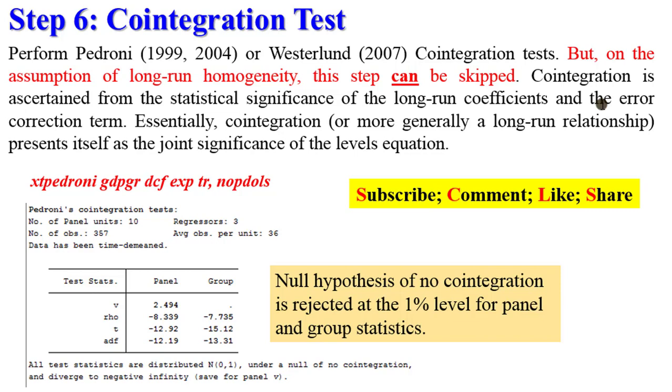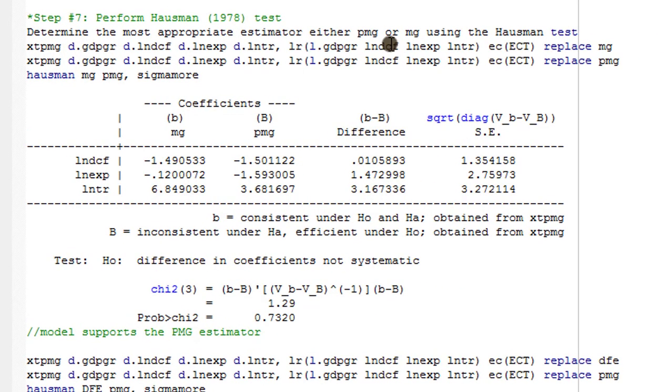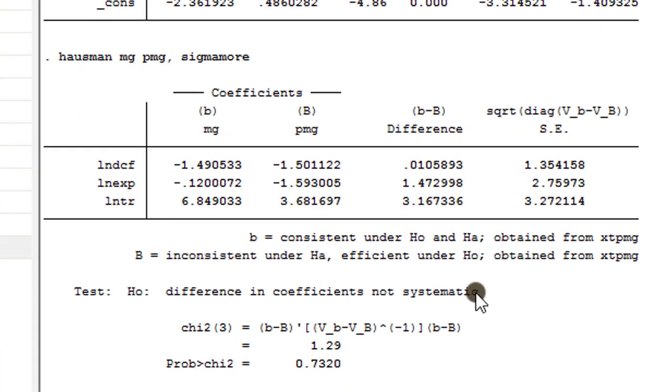Let's move now to step seven. Step seven is to determine which estimator is most appropriate: the pooled mean group or the mean group. Here is the code. I'm going to highlight both. You have the MG, the PMG, and the Hausman test, so I'm going to execute this. We're only interested in the outcome of the Hausman test.